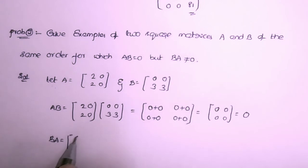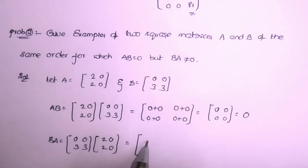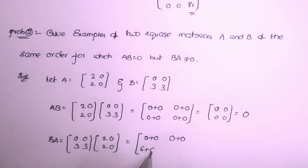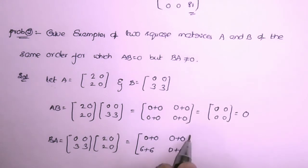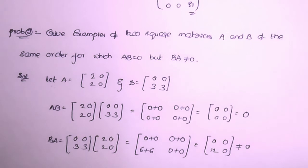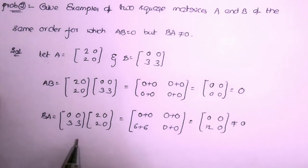Now computing BA: B = [[0,0],[3,3]] times A = [[2,2],[0,0]]. Multiplying: 0×2+0×2=0, 0×0+0×0=0, 3×2+3×2=12... wait — the result is [[0,0],[6,6]], which is not equal to zero. So BA ≠ 0.